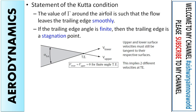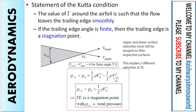The second condition: if the trailing edge angle is finite, then the trailing edge is a stagnation point. As shown in the figure, it has a finite angle with velocities V-lower and V-upper. Both velocities coincide and equal zero for a finite trailing edge angle. Applying Bernoulli's equation, the pressure at the trailing edge equals the total pressure — meaning the trailing edge is a stagnation point.